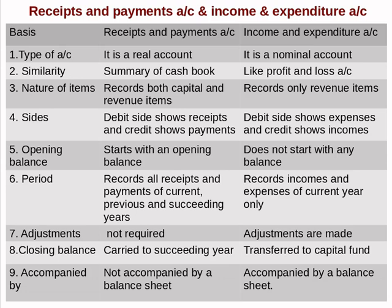Receipt and payment account is a summary of cash book, while income and expenditure account is like the profit and loss account prepared by a profit-seeking organization. Regarding nature of items: receipt and payment account records both capital and revenue items, but income and expenditure account records only revenue items — capital items are not shown in the income and expenditure account. Regarding sides: in receipt and payment account, debit side shows receipts and credit side shows payments; in income and expenditure account, debit side shows expenses and credit side shows incomes.